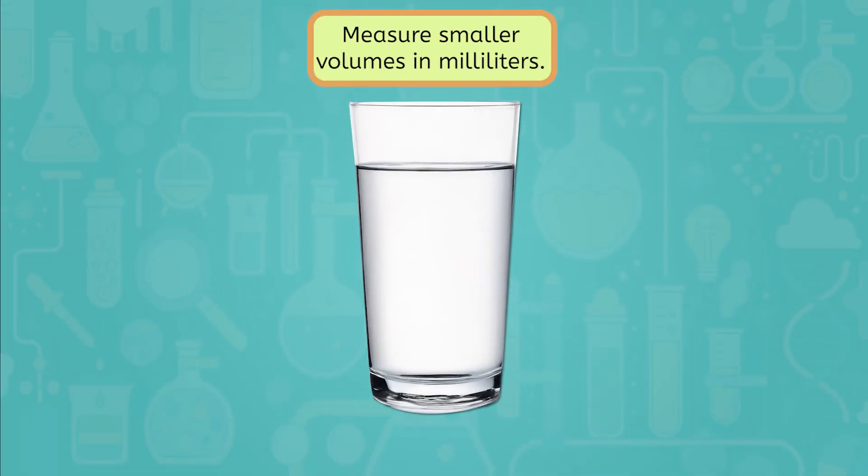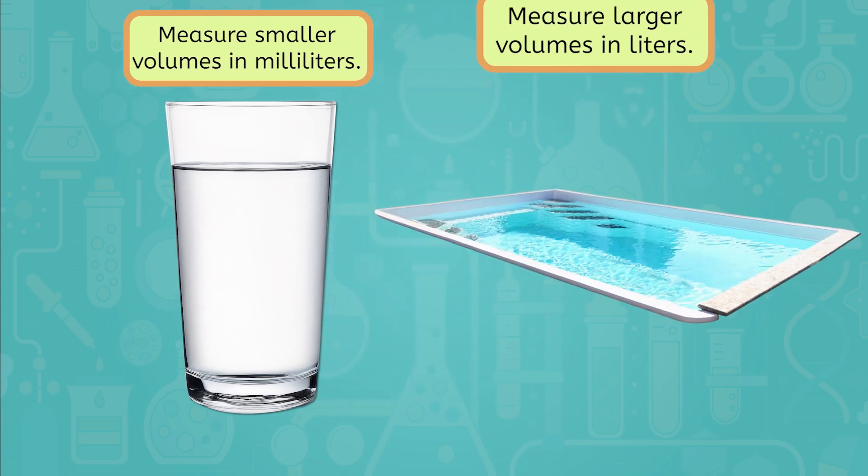Measure smaller volumes of liquid in milliliters. For example, if you're measuring the volume of water in a cup, milliliters are perfect because they're small, precise units. On the other hand, measure larger volumes in liters. If you're measuring the amount of water in a pool, you might use liters because the volume is much larger.